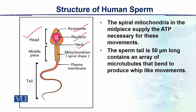The midpiece contains many mitochondria arranged in a spring-like structure. The mitochondria produce the energy needed by the sperm. The seminal fluid in which the sperm are present contains carbohydrates and vitamin C, supporting sperm activity.